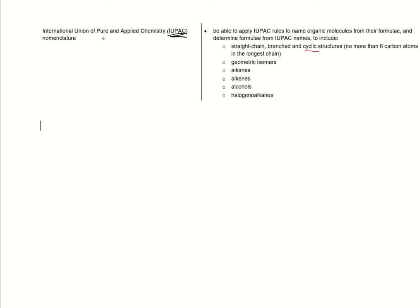First off, we need to know how to count in carbons. So meth, eth, prop, but, pent, and hex. That's 1, 2, 3, 4, 5, 6 there. So 4 carbons means but, 6 means hex, 1 means meth and so on.